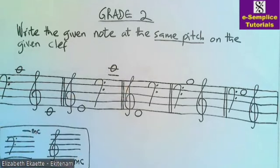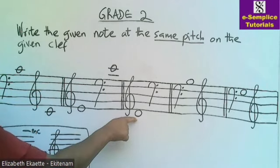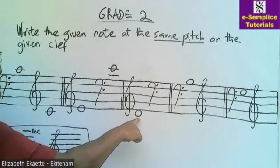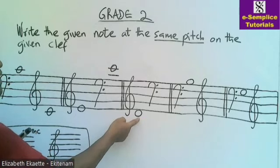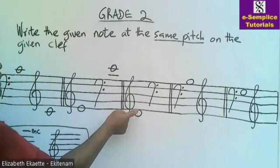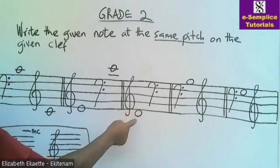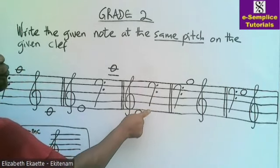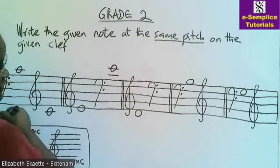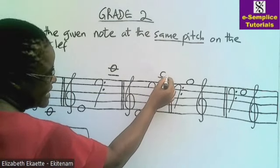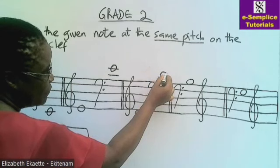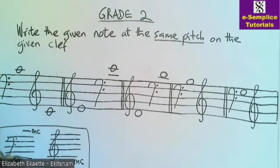This is where your answer should be. We now move to the third question. This is D above middle C — middle C is the first ledger line, so this note is above that middle C. Come to the treble clef and look for D above middle C. This is middle C on this clef, so the next note is D. That is your D above middle C.